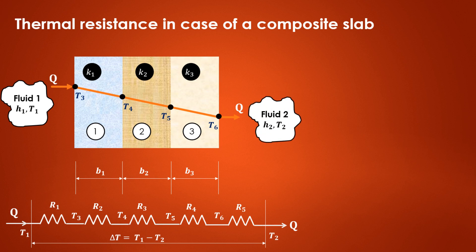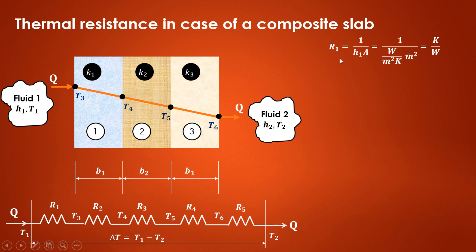Now we consider the case where two different fluids are present on either side of the composite slab. Fluid 1 has heat transfer coefficient H1 and temperature T1, and fluid 2 has heat transfer coefficient H2 and temperature T2. Resistance R1 is between the fluid and the solid surface, so heat transfer is by convection, giving R1 equal to 1 upon H1·A. The unit of H1 is Watts per meter square Kelvin, and the meter squares cancel to give Kelvin per Watt.